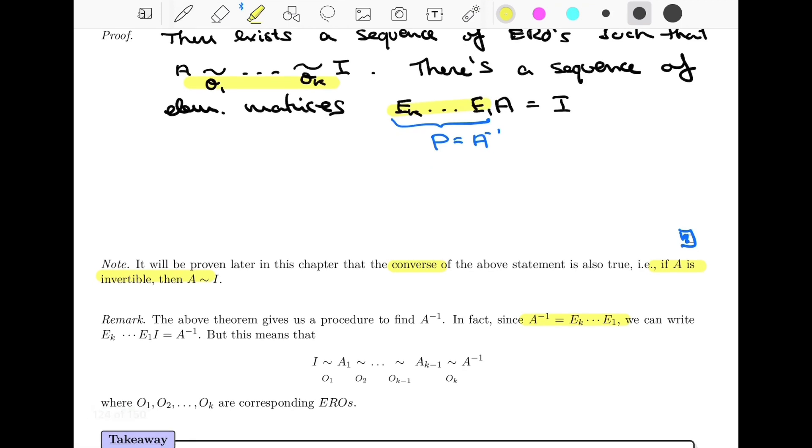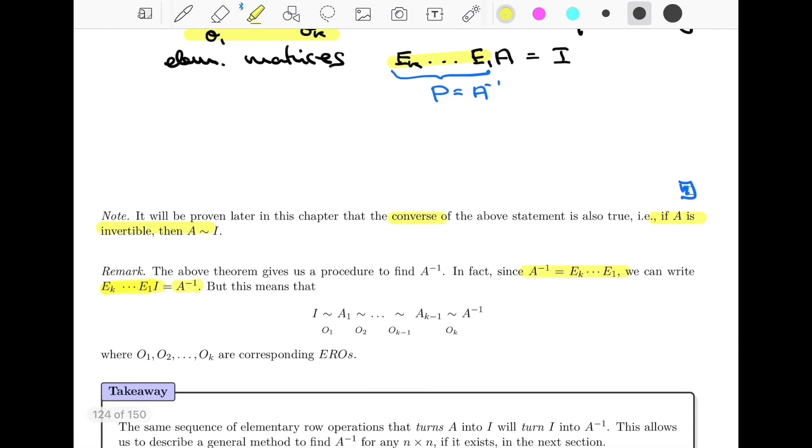But if I flip that statement around, that's the same as saying that EK all the way to E1 is equal to A inverse. You notice I inserted an I here, but that doesn't change anything, right? I'm allowed to multiply by I.